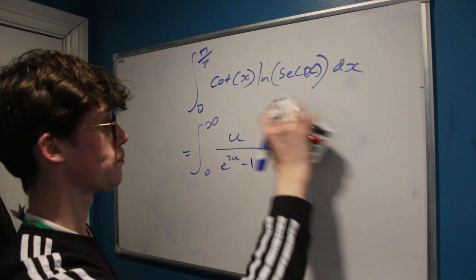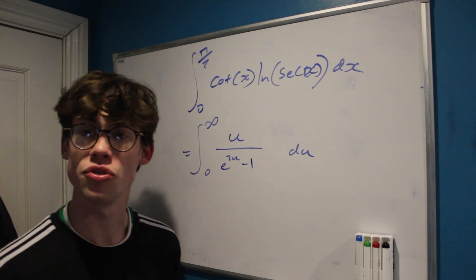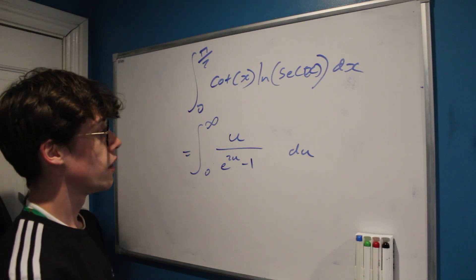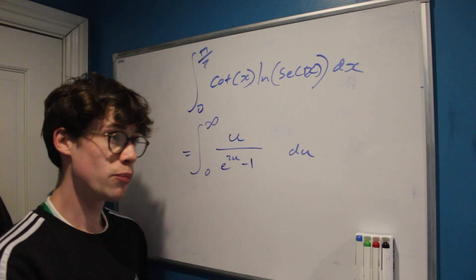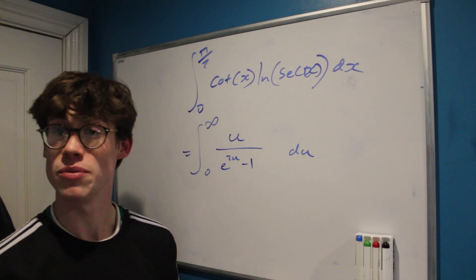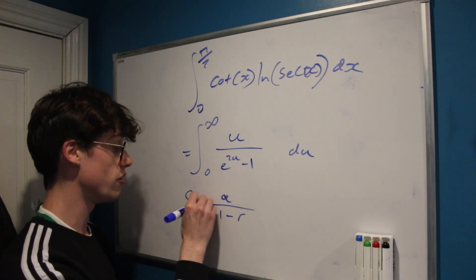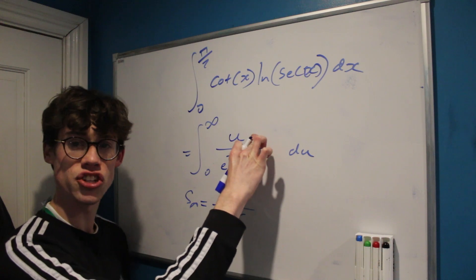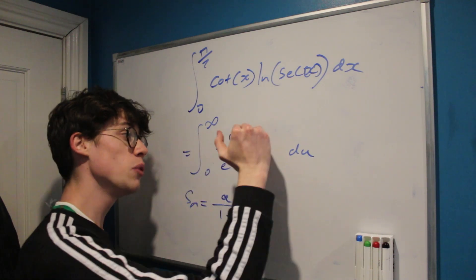We now have an integral in terms of u. Rather than partial fractions, there's a really nice trick: whenever I see something divided by 1 plus or minus something else, it brings to mind the sum to infinity of a geometric series. For a geometric series with first term a and common ratio r, the sum to infinity is a/(1 − r). So the question is: how can I turn this fraction into such a sum?